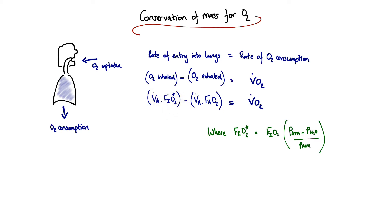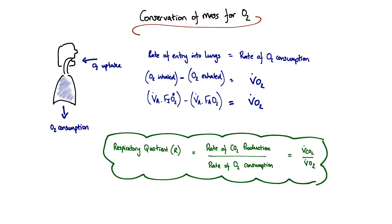The O2 exhaled is simply the alveolar ventilation multiplied by the fraction of oxygen within the alveoli. We next invoke the concept of the respiratory quotient, defined as the rate of CO2 production divided by the rate of oxygen consumption — V dot CO2 divided by V dot O2. The value of the respiratory quotient depends on dietary intake: it's usually quoted as one for carbohydrates, but 0.8 for a mixed Western diet. Rearranging gives us V dot O2 equals V dot CO2 divided by the respiratory quotient, which we can then substitute in.